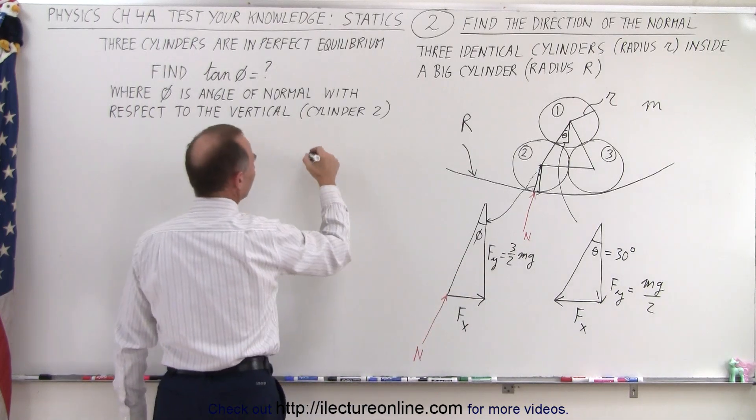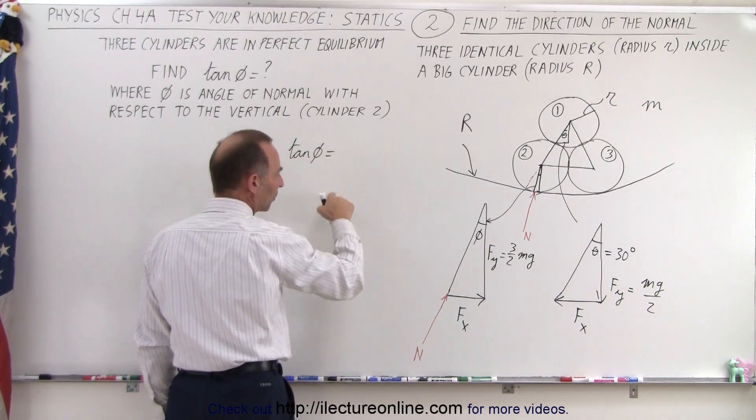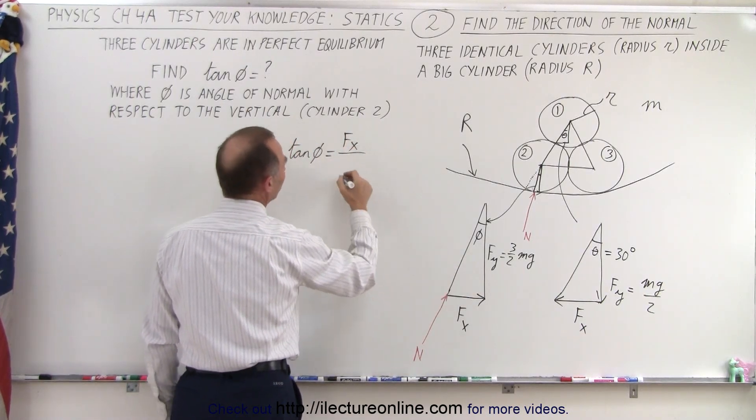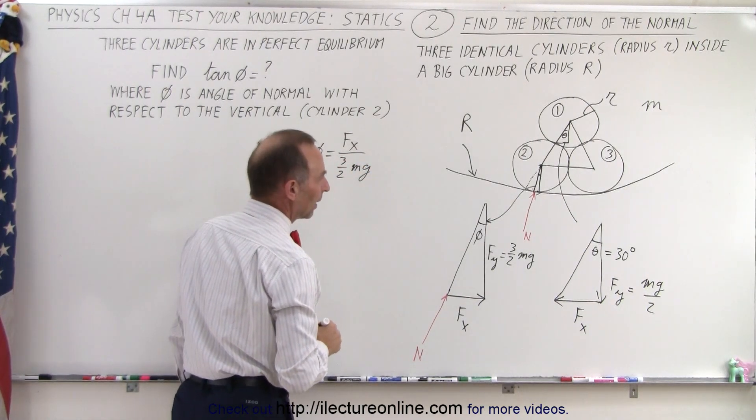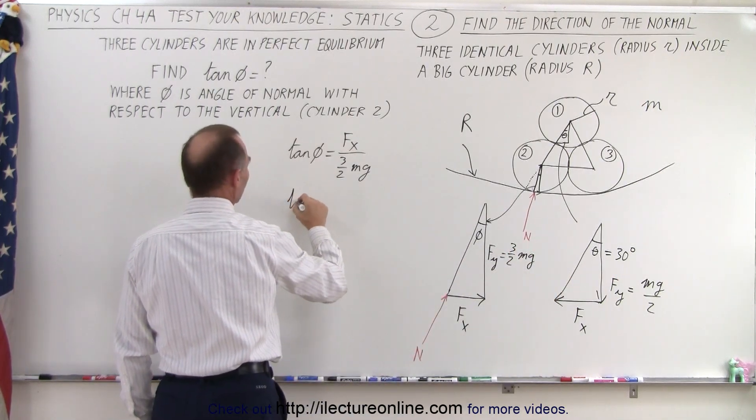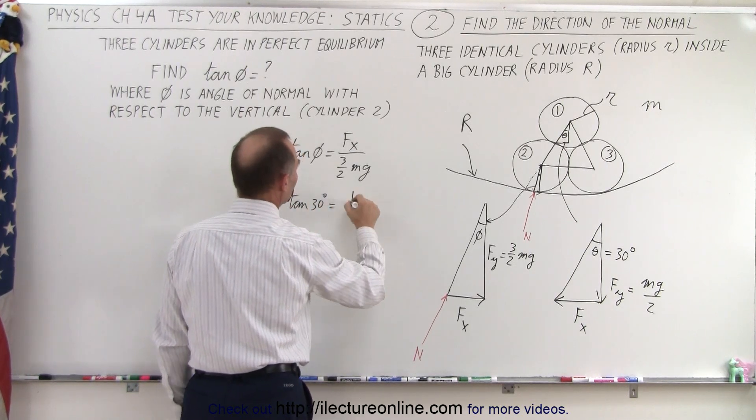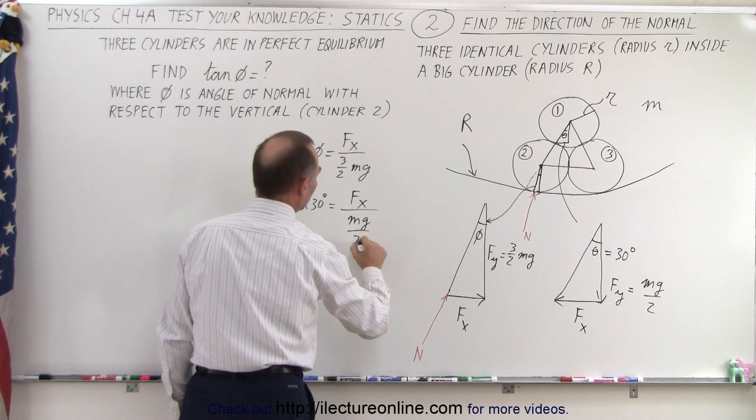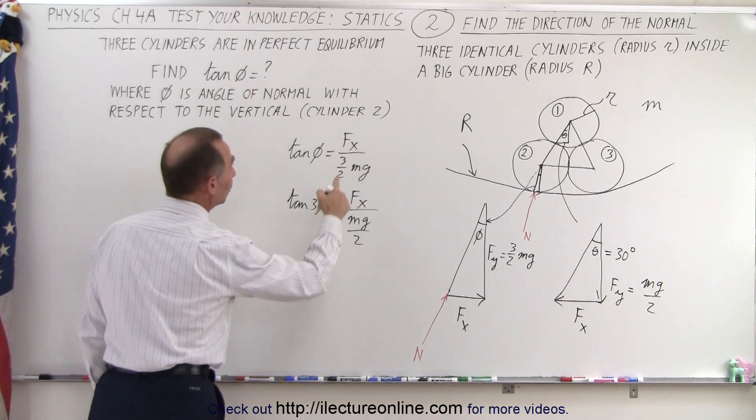So what I can do for this triangle, I can say that the tangent of phi, which is equal to the opposite over the adjacent, would be F sub X divided by adjacent, which is 3 halves Mg. What I can also do on this one here, I can say that the tangent of theta, which is 30 degrees, is equal to the opposite, which is F sub X, divided by Mg over 2, or half Mg.